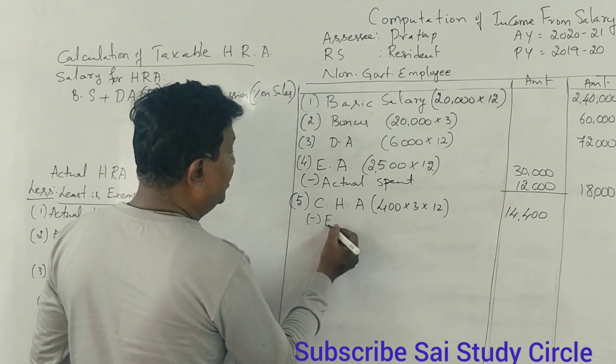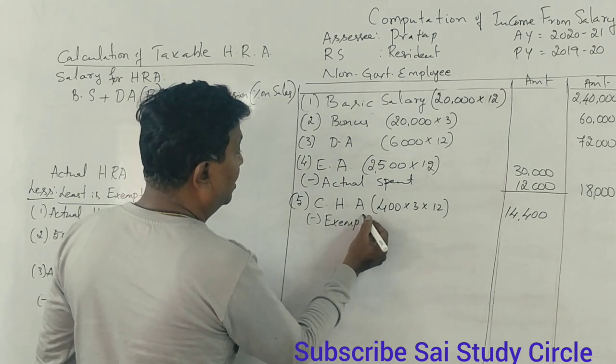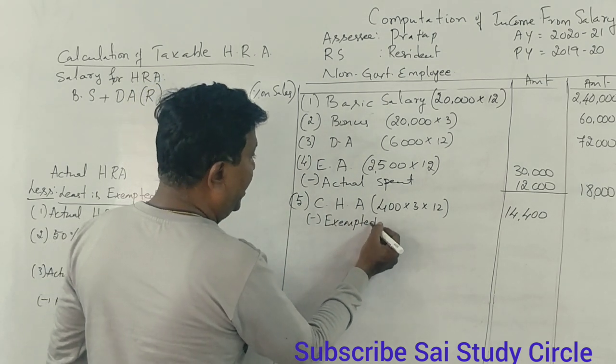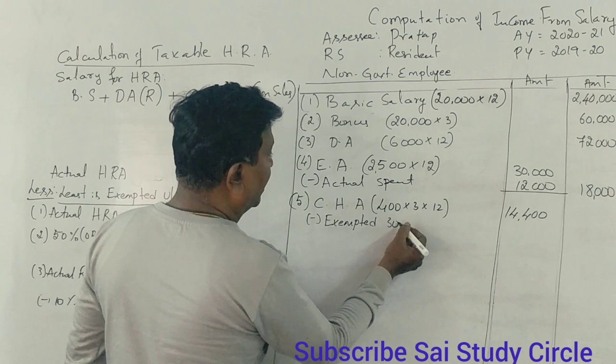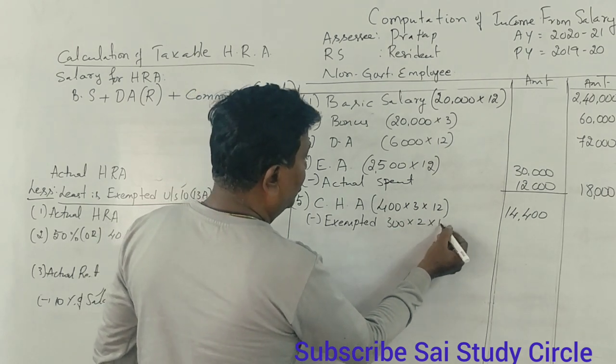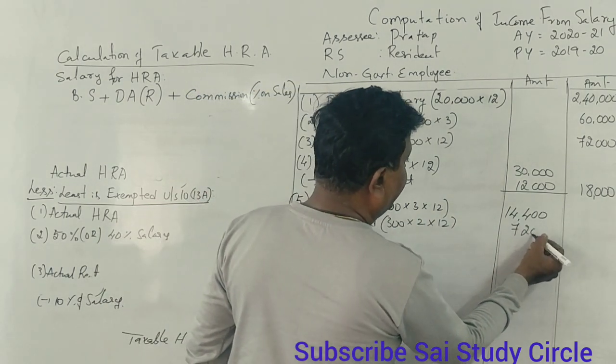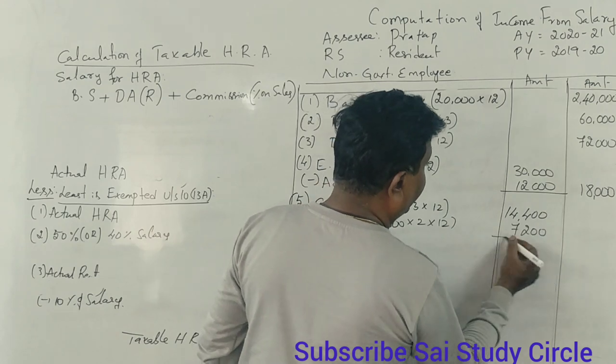The exemption limit for children's hostel allowance is Rs. 300 per month. For two children only, the exemption is Rs. 7,200.